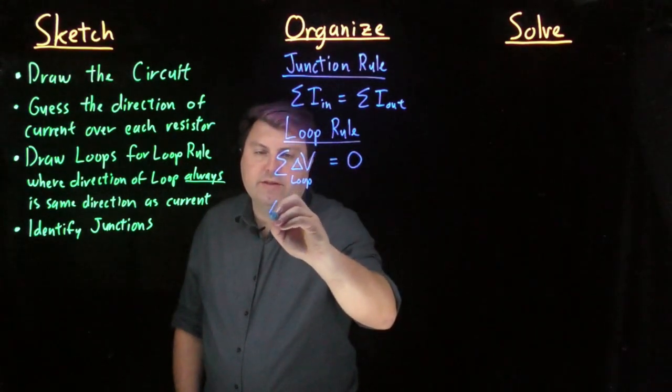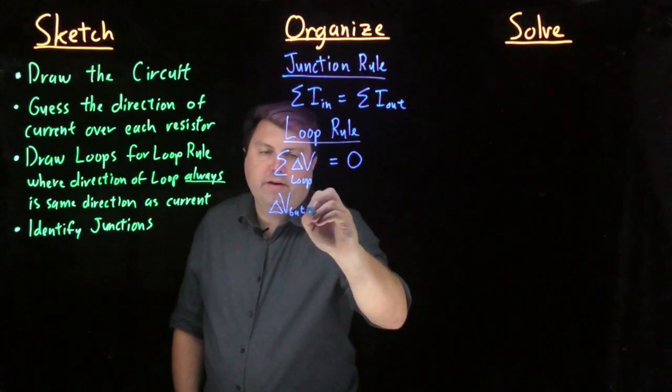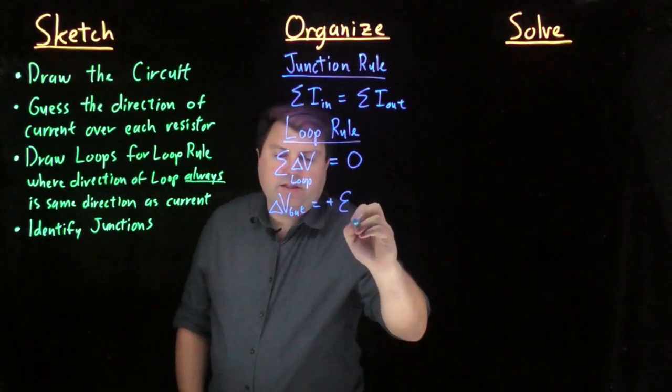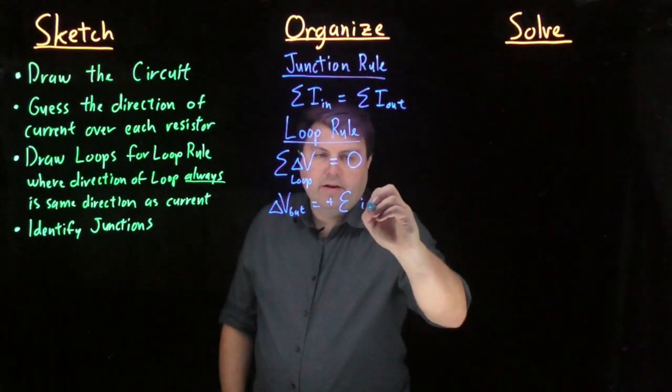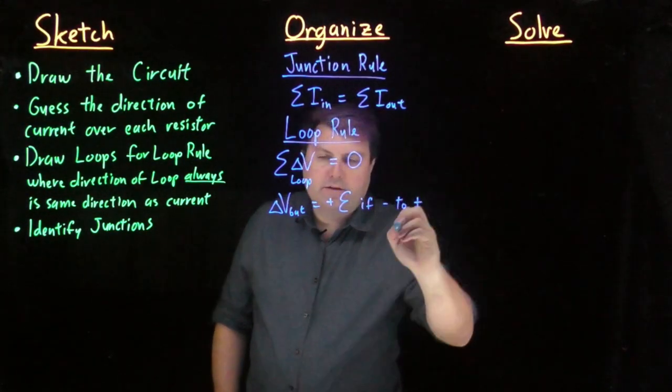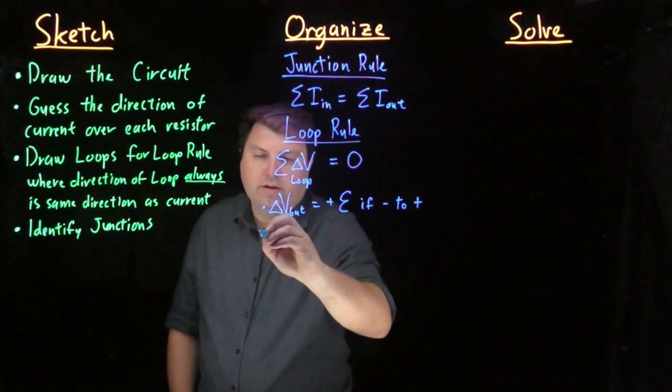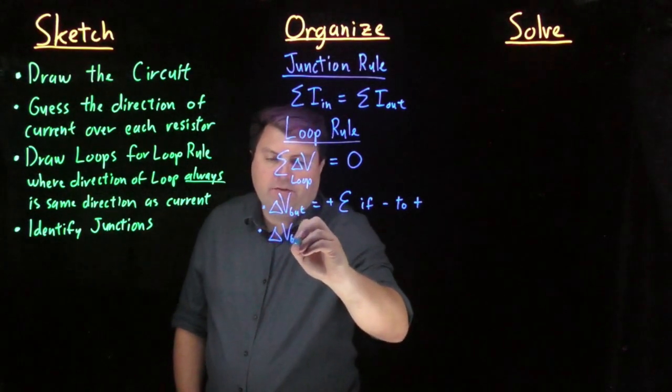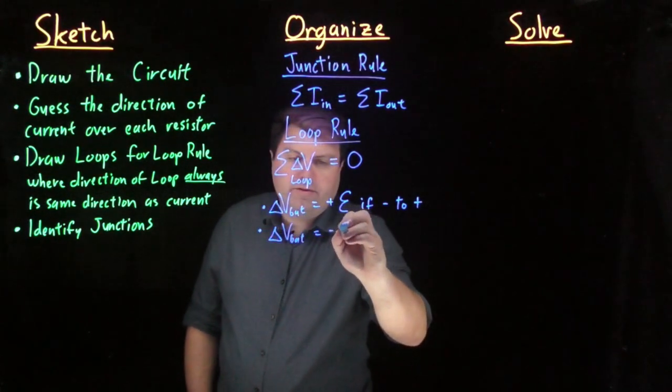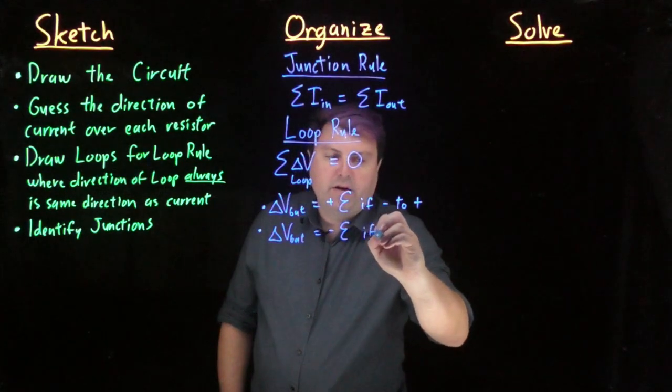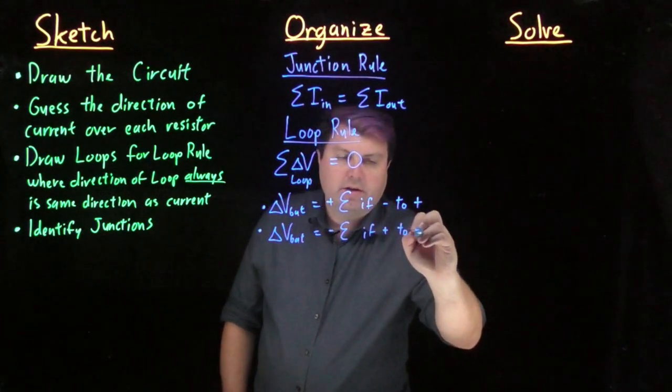So when we are doing this, the delta V of our battery is equal to the positive EMF if we're going minus to plus. The delta V of our battery is equal to negative EMF if we're going from plus to minus.